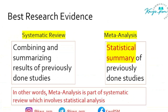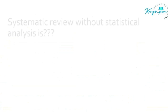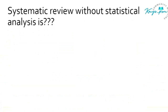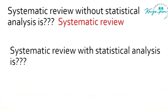In other words, meta-analysis is part of systematic review which involves statistical analysis. So meta-analysis is a systematic review with statistical analysis, and systematic review without statistical analysis is just a systematic review. To summarize: systematic review without statistical analysis is systematic review; systematic review with statistical analysis is meta-analysis. This was a previous year exam question.